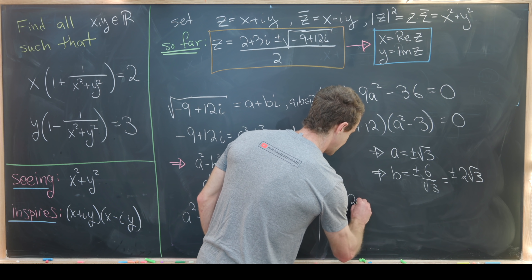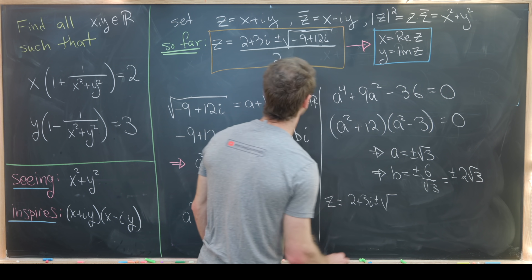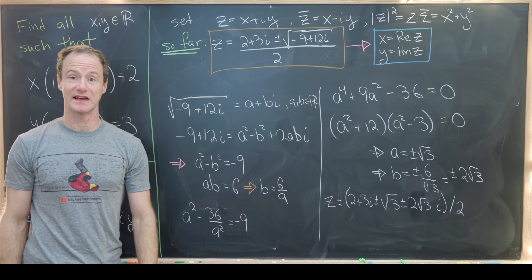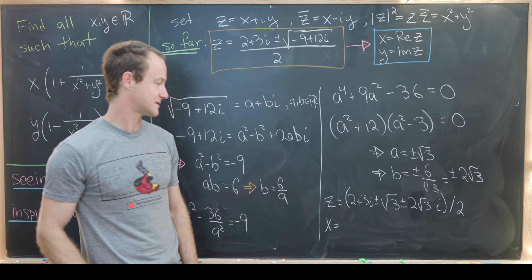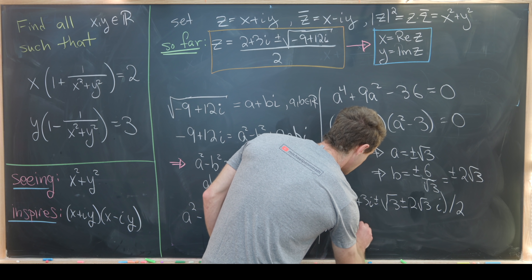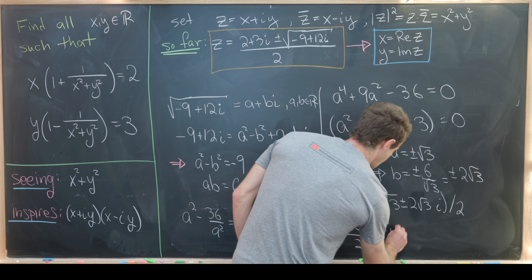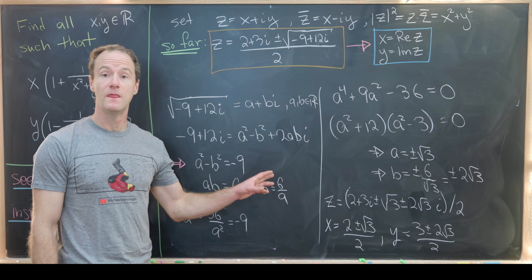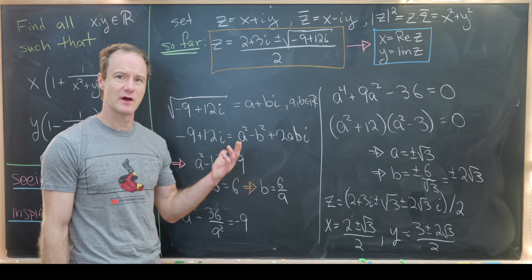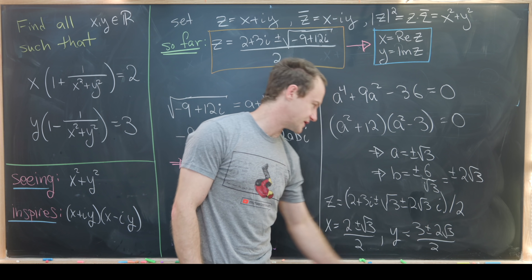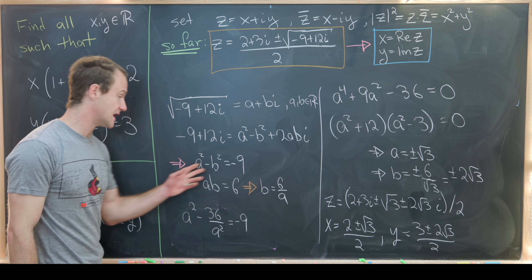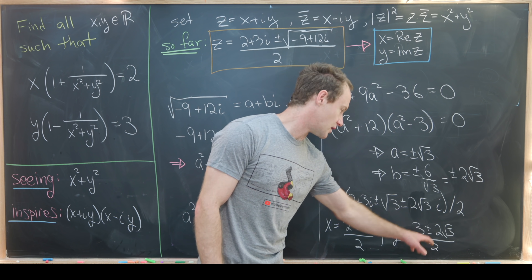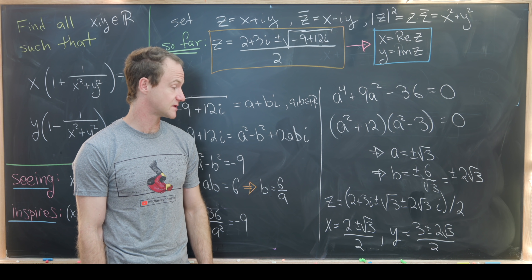Substituting back, z = (2 + 3i ± (√3 + 2√3·i)) / 2. Extracting real and imaginary parts: x = (2 ± √3) / 2, and y = (3 ± 2√3) / 2. This looks like four solutions due to the ± signs, but since a and b were constructed together, the signs must match — both plus or both minus. So we really only have two solutions. And that's a good place to stop.